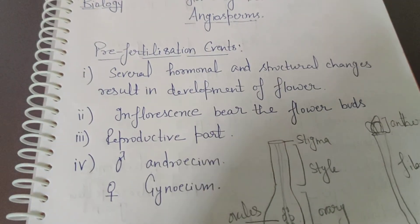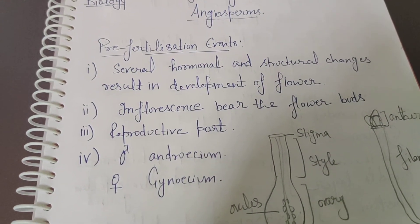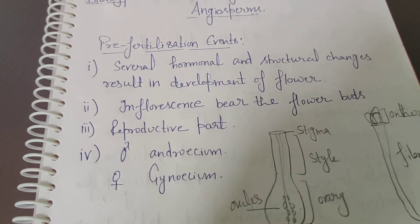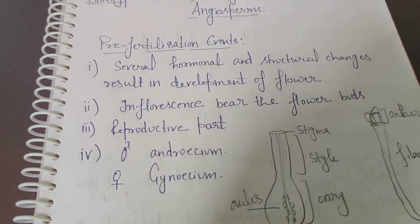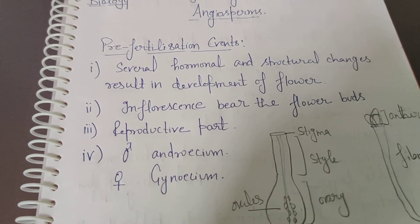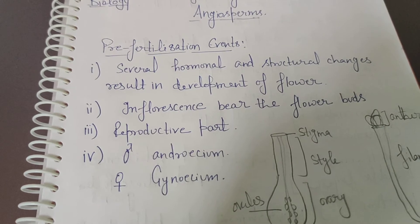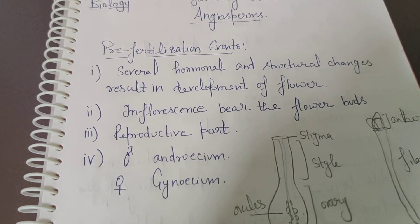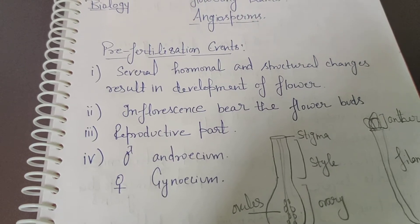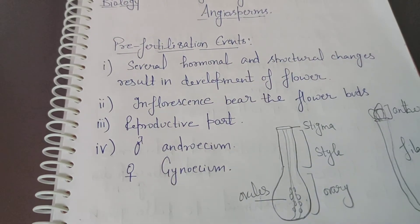Now let's talk about the pre-fertilization events. As discussed in the previous chapter, there are three types of events: pre-fertilization, fertilization, and post-fertilization, because in sexual reproduction these same events take place. So let's start with the pre-fertilization events in flowering plants.